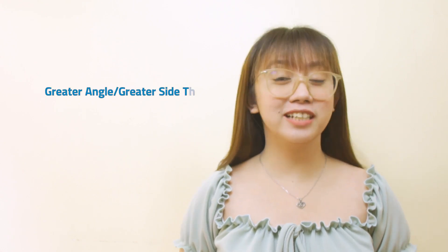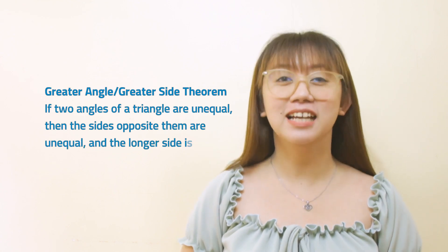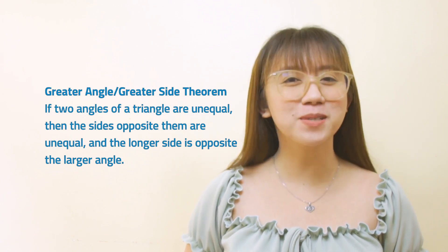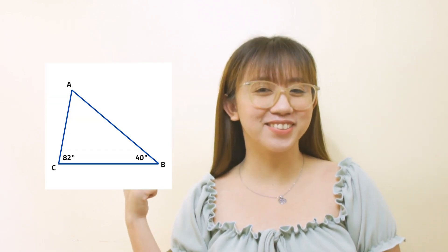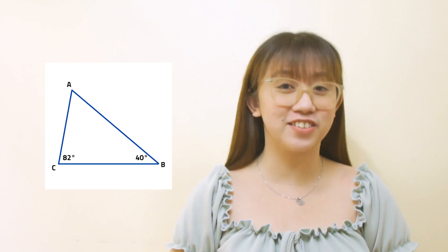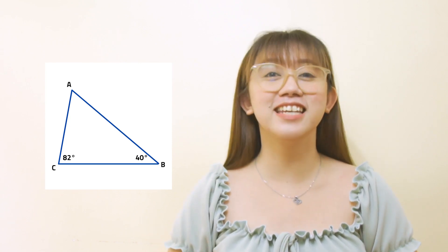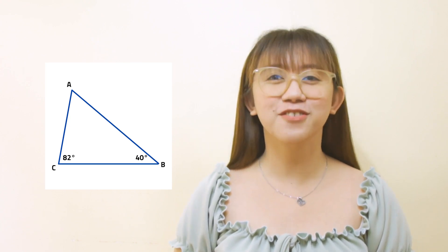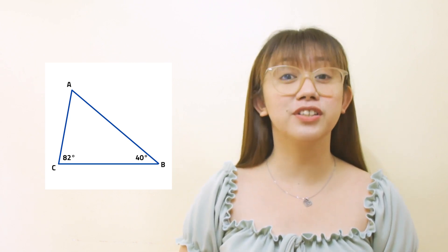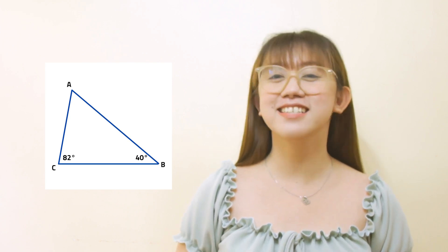The greater angle or greater side theorem tells us that if two angles of a triangle are unequal, then the sides opposite them are unequal, and the longer side is opposite the larger angle. Since the sum of the interior angles in a triangle is 180 degrees, with angle A equals 58 degrees, the angles in increasing order are 40 degrees, 58 degrees, and 82 degrees. By this theorem, the sides from shortest to longest are sides AC, CB, and AB.